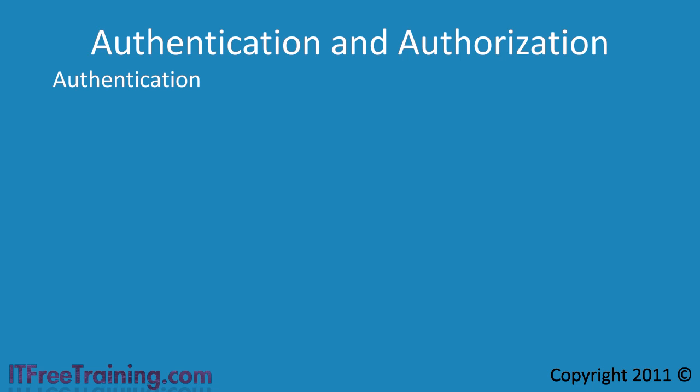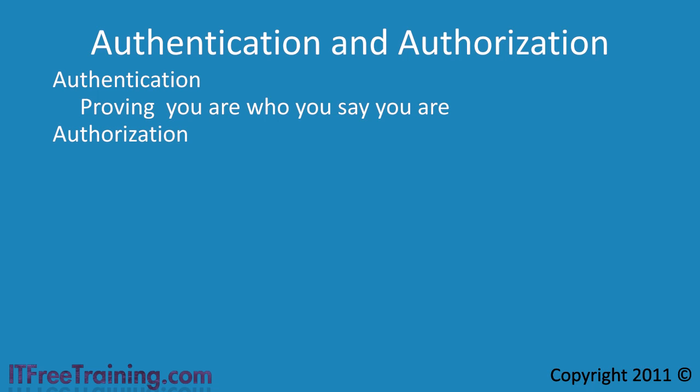Authentication in Windows is essentially proving you are who you say you are. Once Windows has established who you are, you can then access resources on the network and the local computer. Deciding what you have access to is called authorization — the process of deciding what you have access to once you have been authenticated. To be authorized to access anything, you first need to be authenticated.